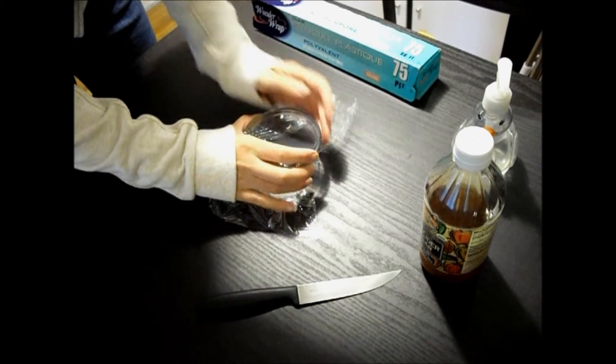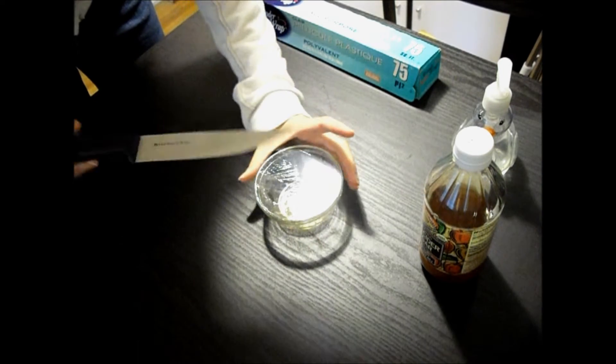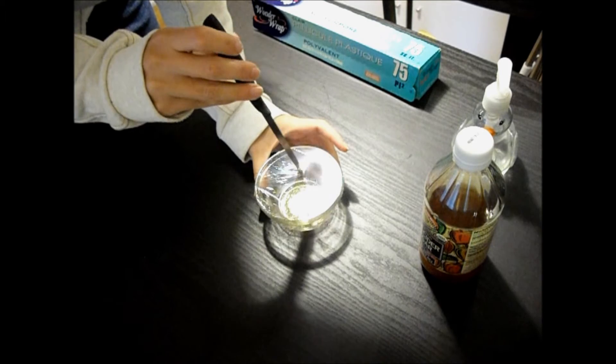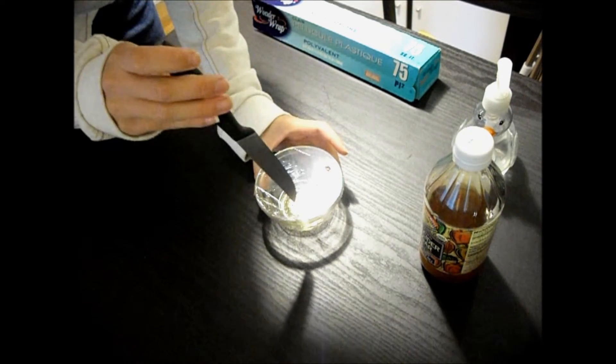And then use just a regular knife and poke some holes into that plastic wrap so that the fruit flies can crawl through and get at that apple cider vinegar.